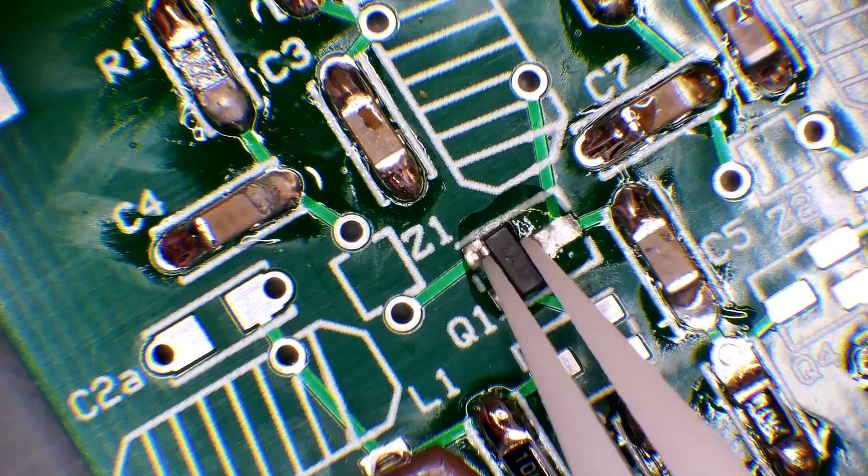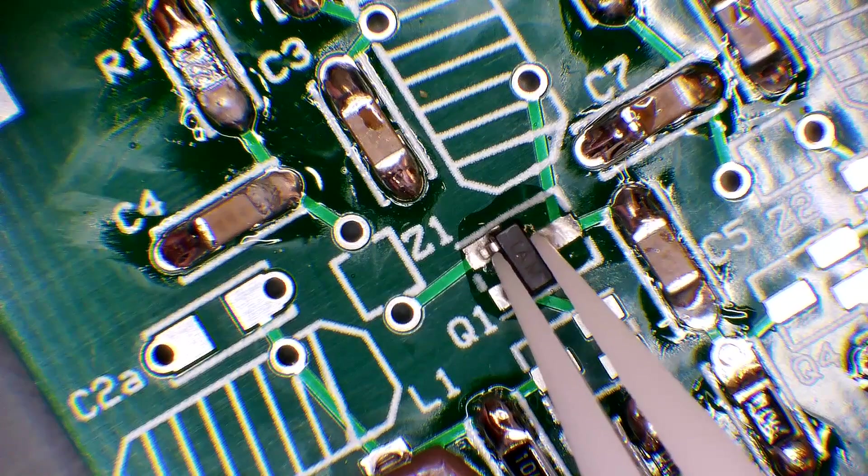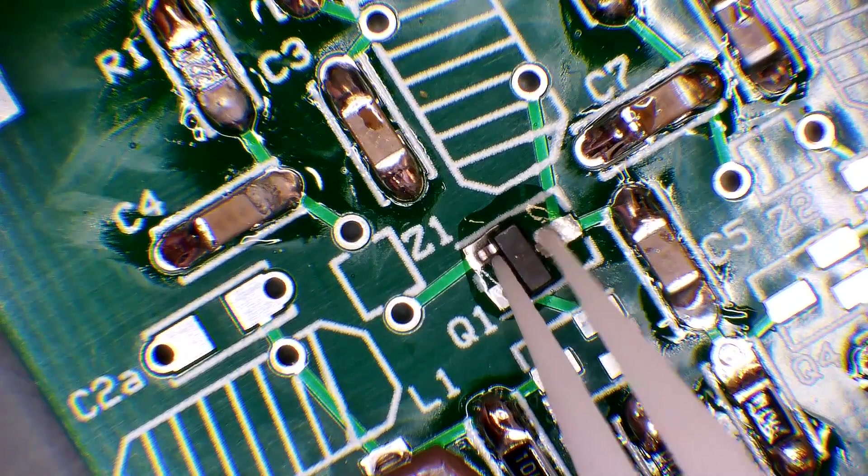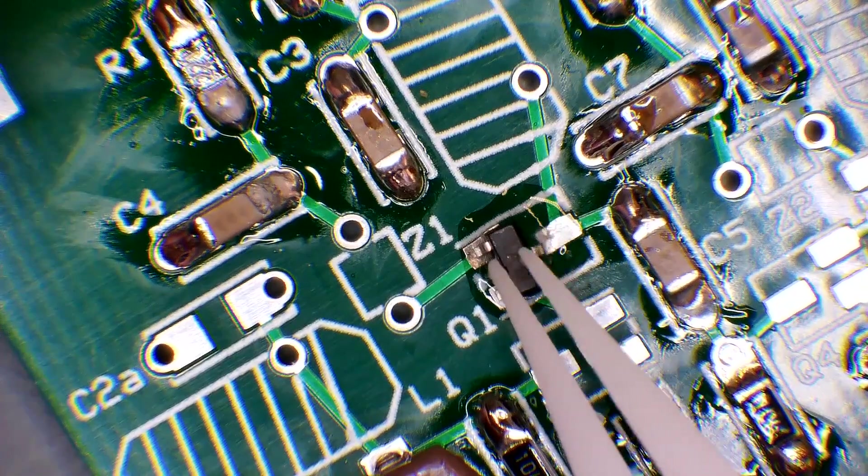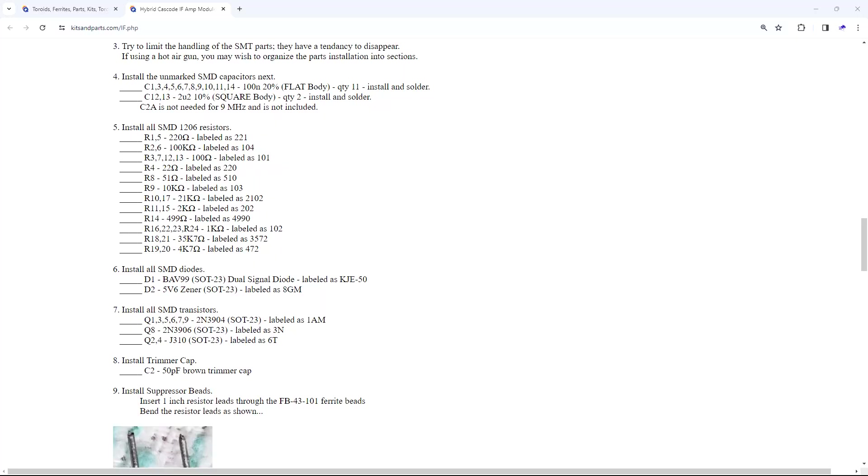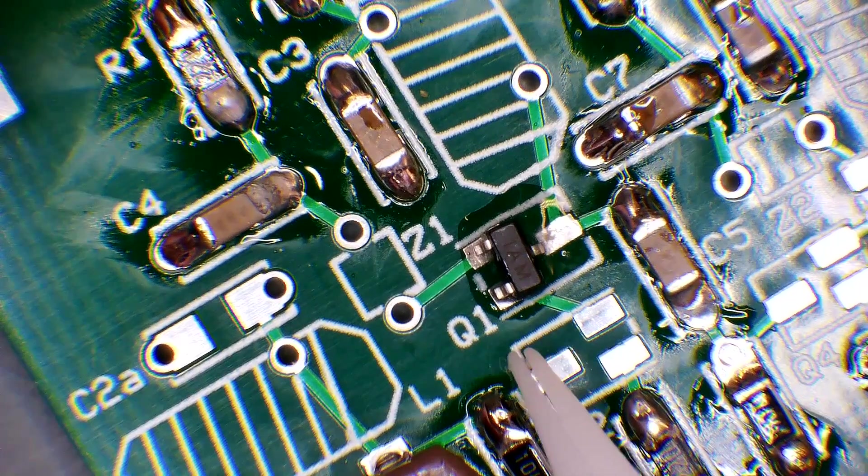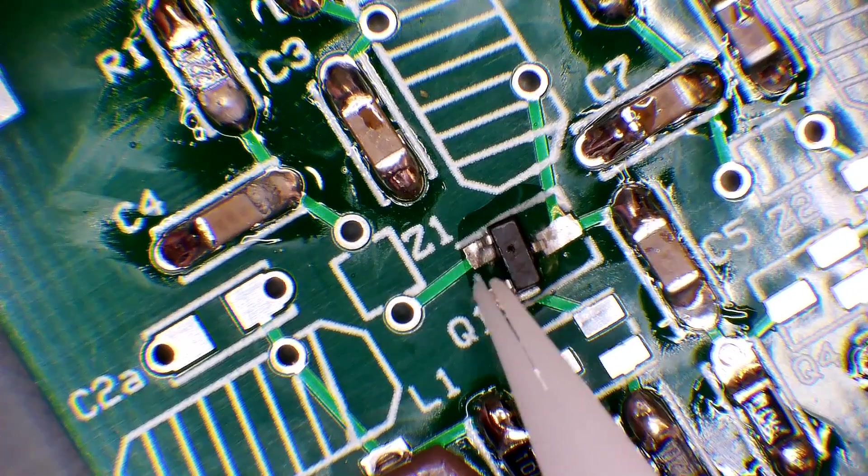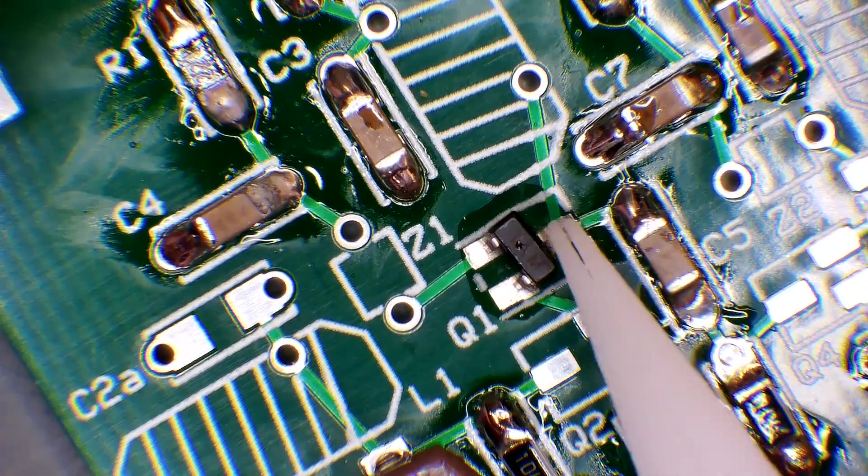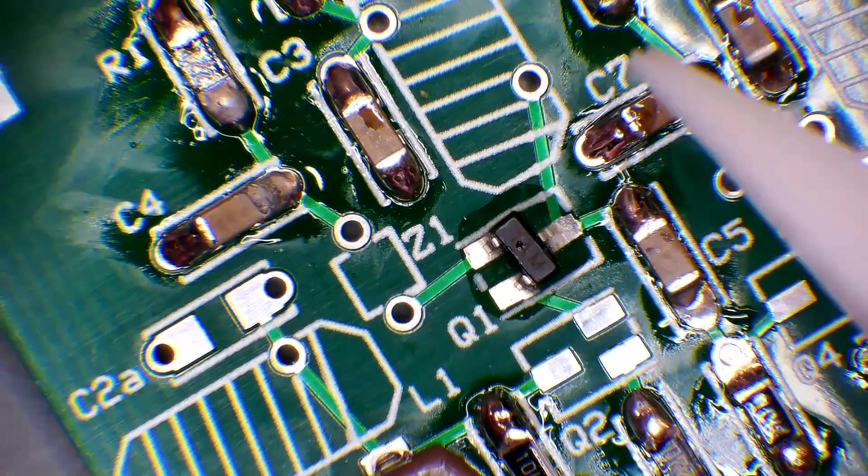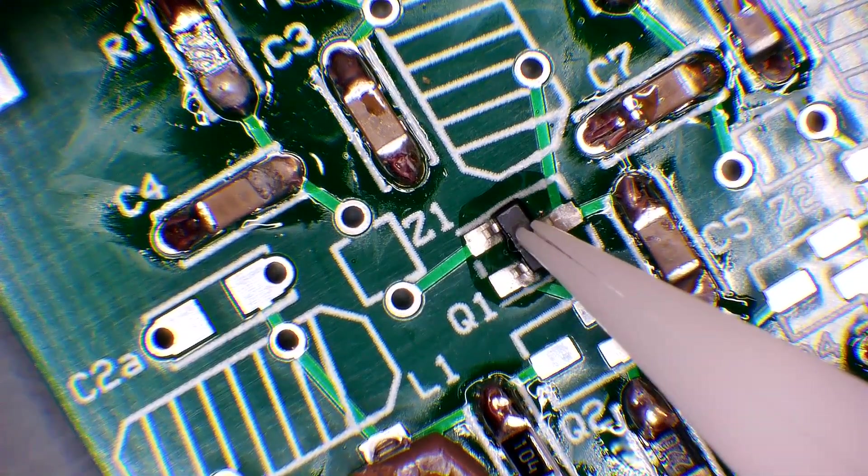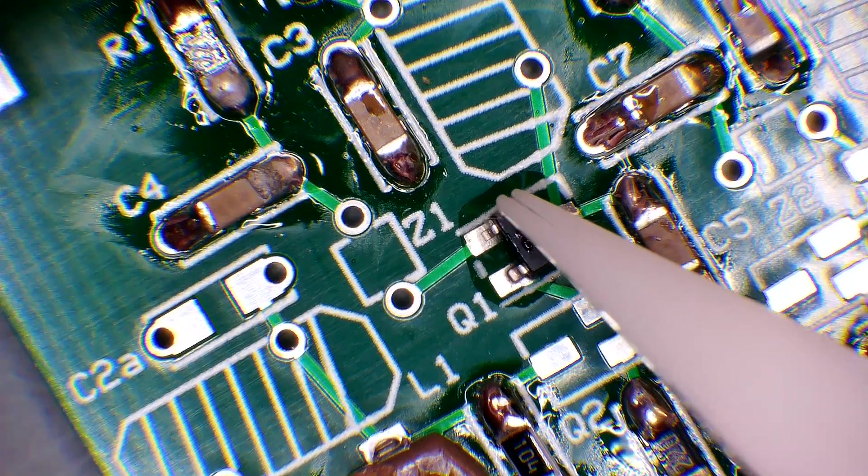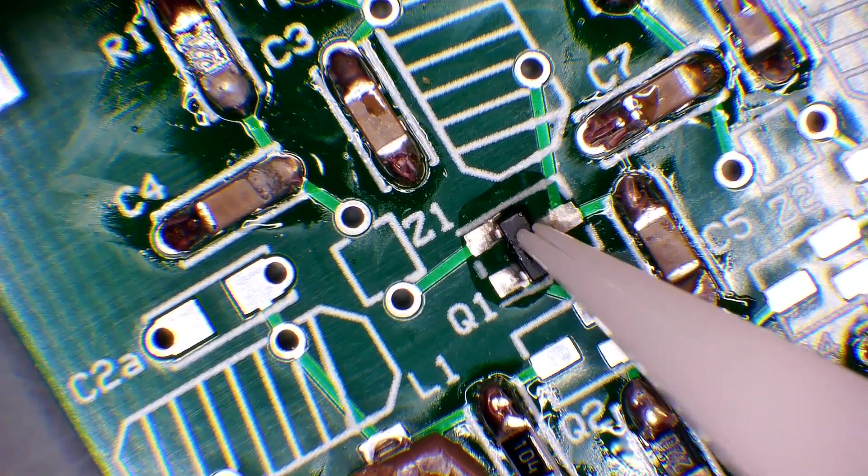We're going to get him in place. Now it tells you this is a 2N2904 and it's labeled 1AM, which is what I thought. So we will get him in place. We will kind of line him up and get him where we'd like and push down and over in position good, like this.